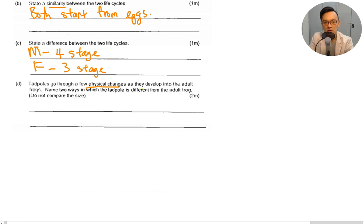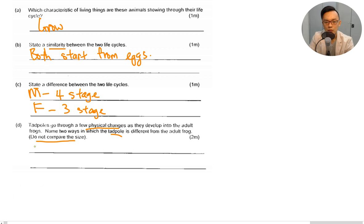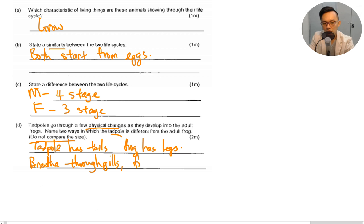Tadpoles go through a few physical changes as they develop into the adult frog. Name two ways the tadpole is different from the adult frog — do not compare size. First, a tadpole has a tail but the adult frog has legs. Second, a tadpole breathes through gills, but the adult frog breathes through its moist skin.